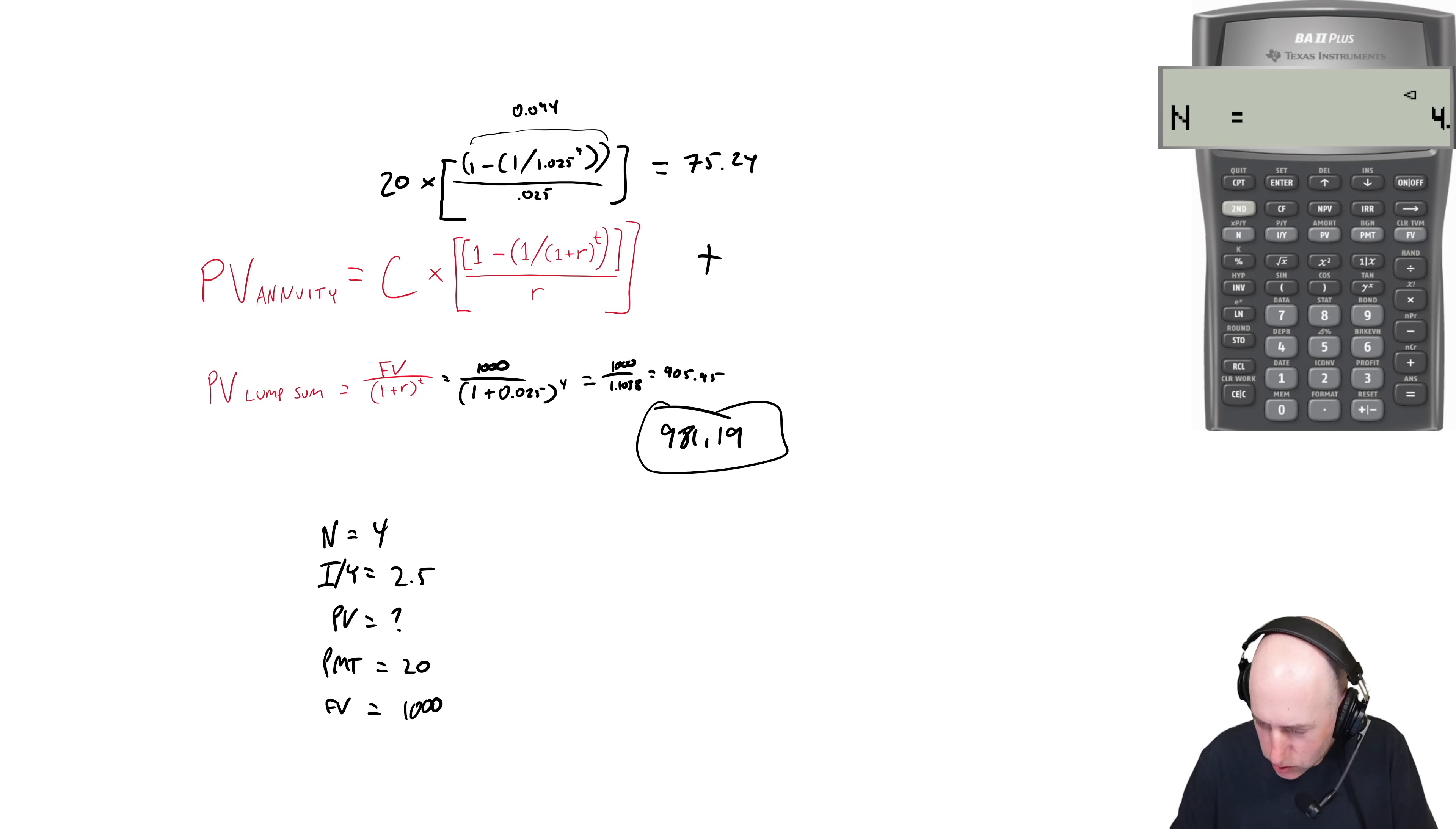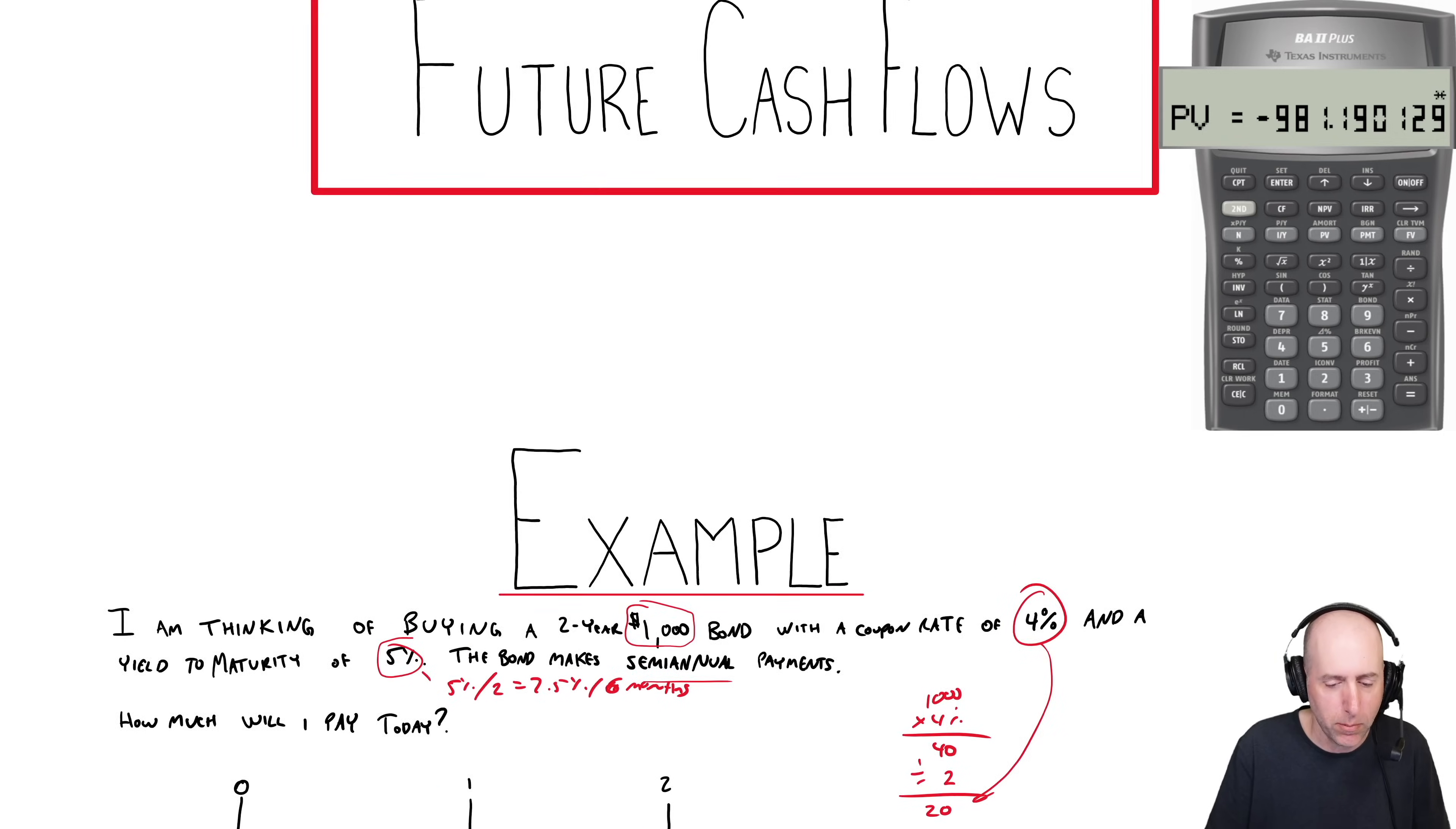So let's punch these all in. 4 goes in as N, 2.5 goes in as IY, PV we don't know, PMT is 20, and there's money coming to us, $1,000 is our future value. We compute PV and I get 981.19. So how much is this bond worth? It's worth 981.19. There we have it, we've solved for our bond.